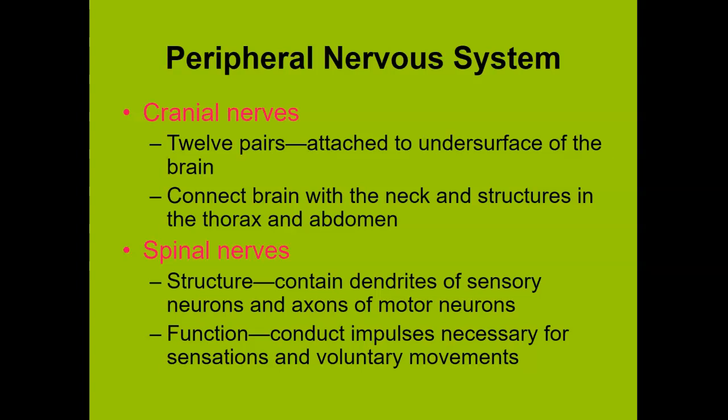The meninges — dura, arachnoid, and pia mater — do not extend farther than the spinal cord. The nerves have their own epineurium and endoneurium. The cranial nerves are 12 pairs attached to the undersurface of the brain, connecting to the brain and some portions of the thorax and abdomen. The spinal nerves are what we just looked at. When we talk about nerves, they're pairs; vertebrae are singular.